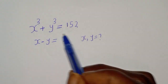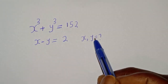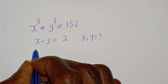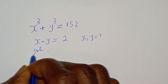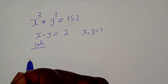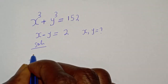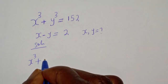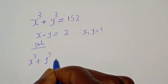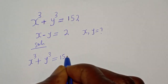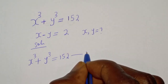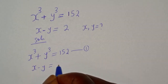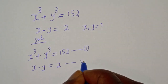Hello, welcome to Math4Focus. We want to find the value of x and y from this given math Olympiad question. x raised to power 3 plus y raised to power 3 is equal to 152 — let's call this equation 1. x minus y is equal to 2 — let's call this equation 2.